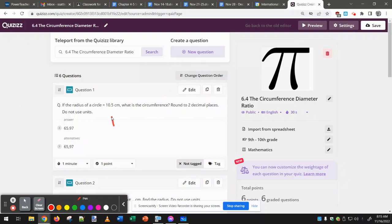So if the radius is 10.5, then that means the diameter is twice as big as that. So 10.5 times 2 is 21.